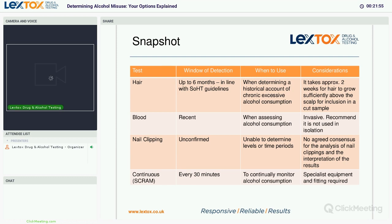For continuous testing using the SCRAM bracelet, alcohol is tested every 30 minutes of every day the bracelet is worn. Typically the bracelet is worn for 30, 60, or 90 days, with reports provided every 30 days or weekly within that period. SCRAM is used to continually monitor alcohol consumption over a period of time — it could be useful if the individual has no hair at all, or if you need to see if somebody is using alcohol during periods of contact. Considerations include that it requires specialist equipment and fitting, as one of our collectors must go and fit the bracelet and base station in the donor's home.